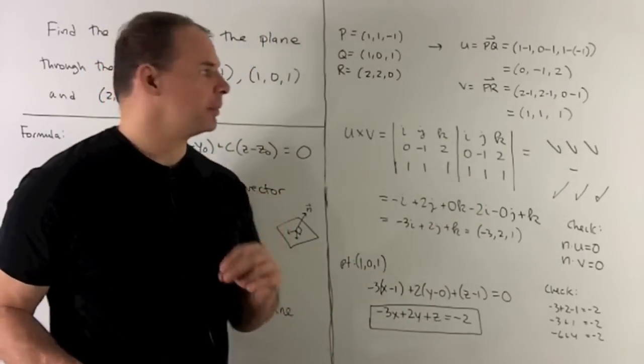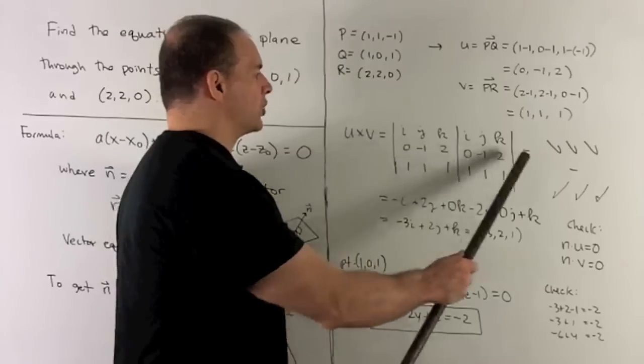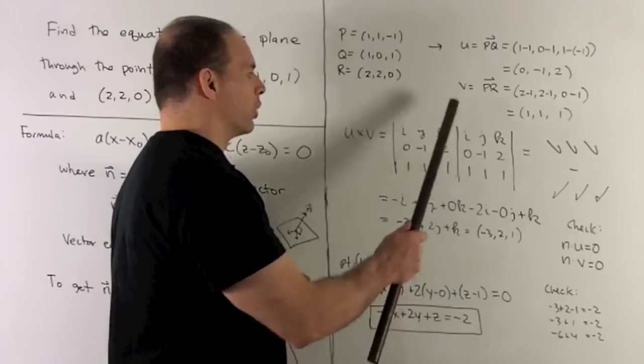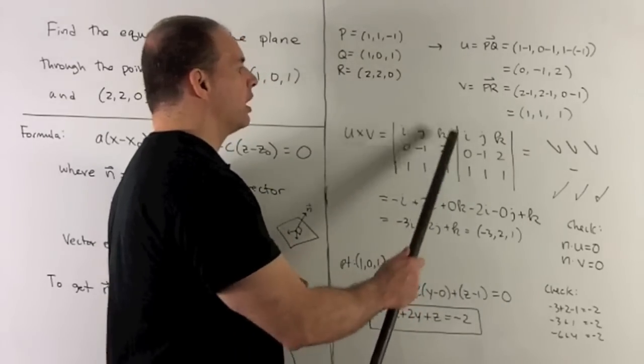We take the cross product. So I'll load our vectors in as rows. Okay, note, I'm going to rewrite this matrix here a second time.